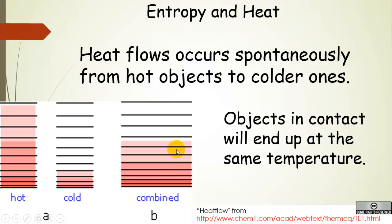And in this combined state, you can see that more energy states than the cold object are accessible, but fewer than the hot object. So we end up kind of in the middle.